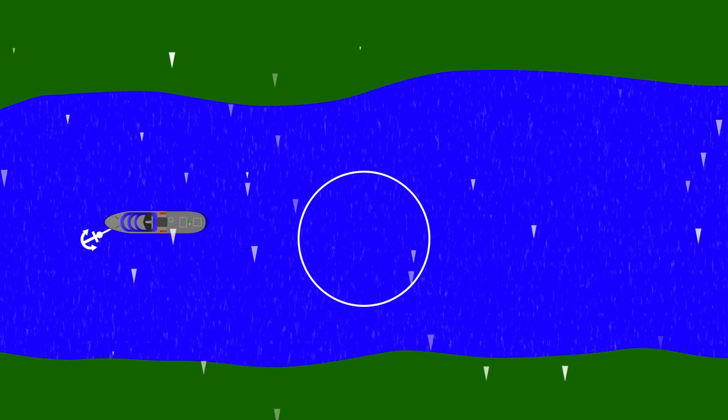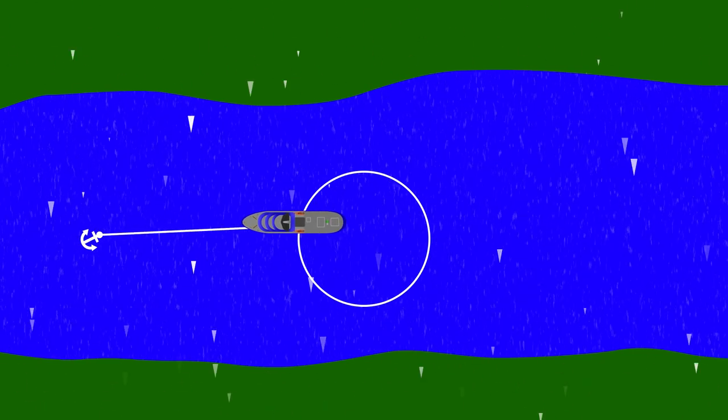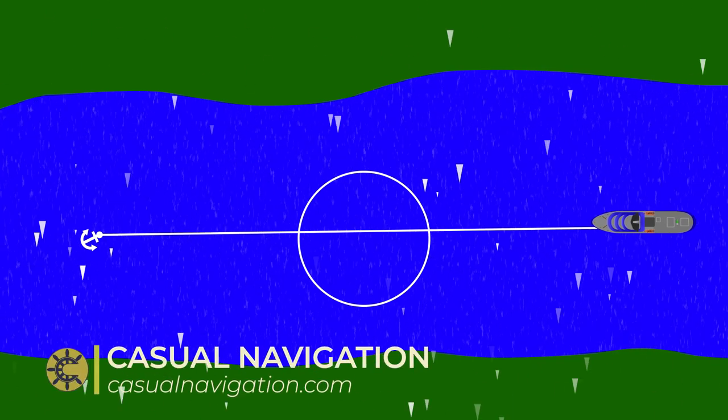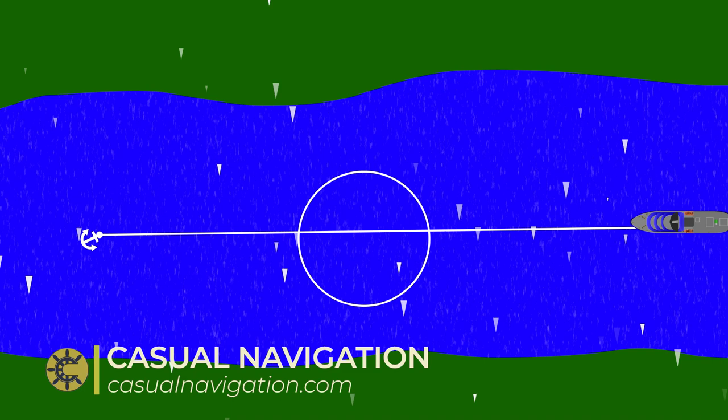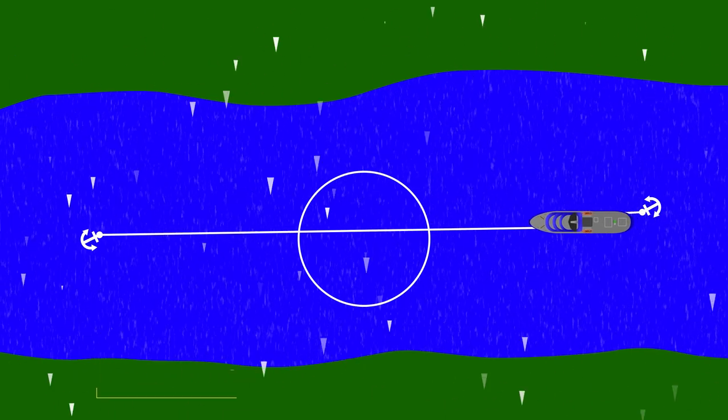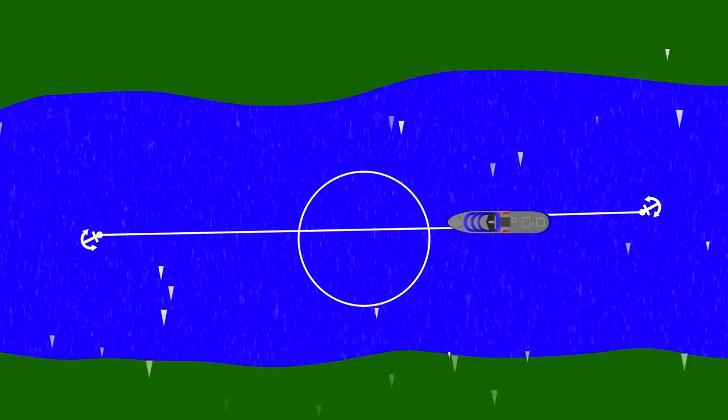In today's video we're going to be looking at the standing maw. It's one of the three main mawring or anchoring techniques along with the running maw and the open maw. The standing maw and the running maw result in pretty much the exact same configuration, they're just two different ways of accomplishing the same thing.